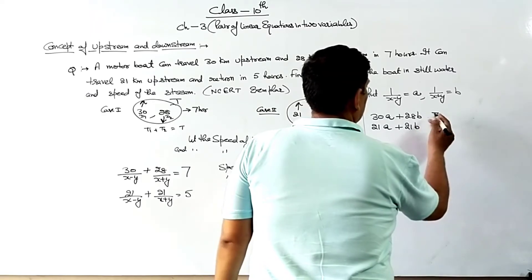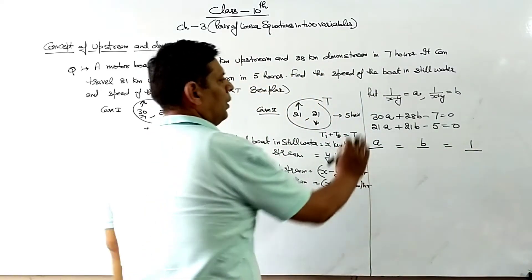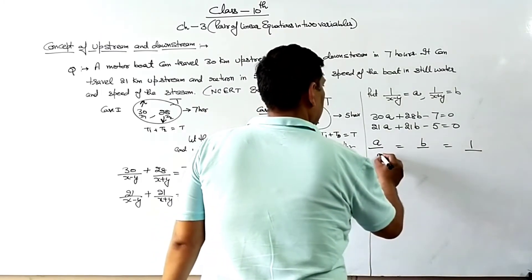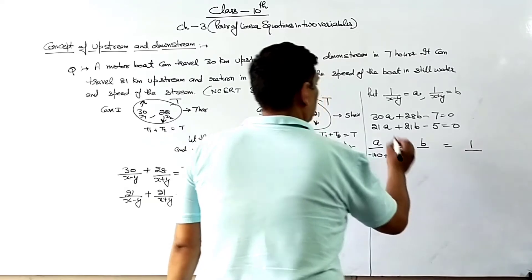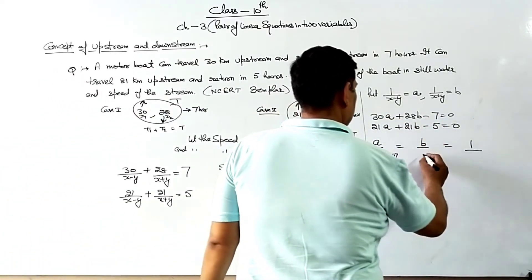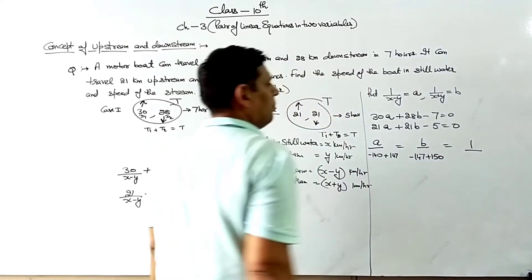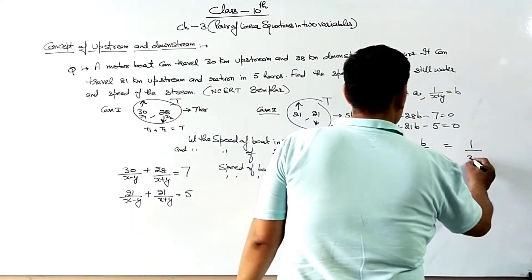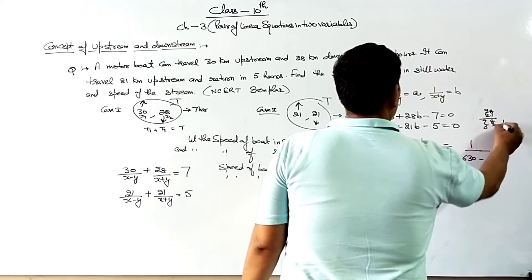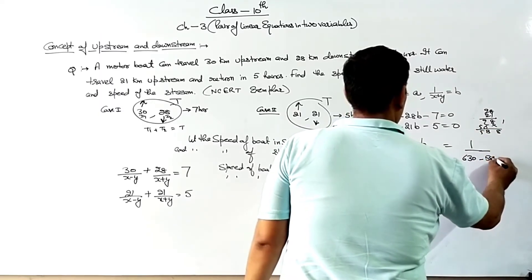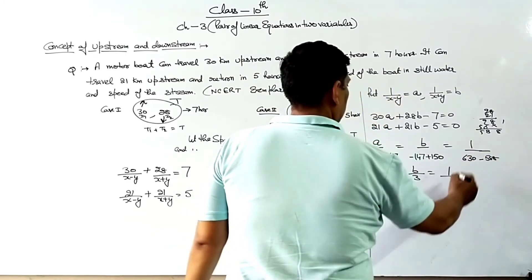I will try it by cross multiplication. Setting up: A by, B by, and 1 by. Computing: A by (28 into minus 5 minus 21 into minus 7) gives minus 140 plus 147, which is 7. B by (minus 147 plus 150) gives 3. And 1 by (360 minus 588 ... wait, 630 minus 588) gives 42.